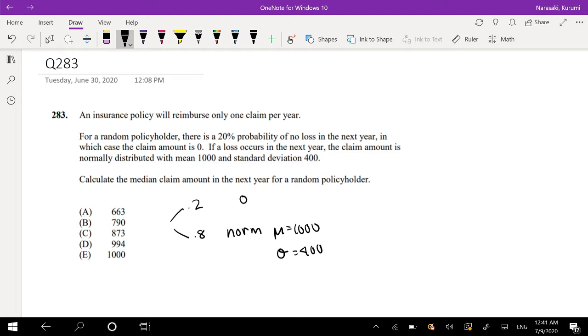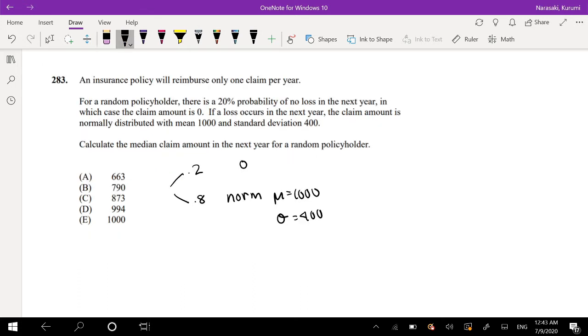Okay, and we're looking to calculate the median claim amount in the next year for a random policyholder. All right, so it's safe to assume that 0 is the lowest amount of claims per year because we can't really have negative claims. And we're looking for the 50% mark.